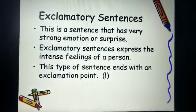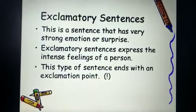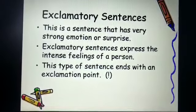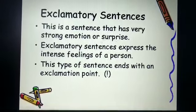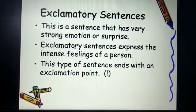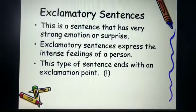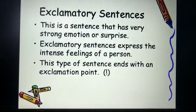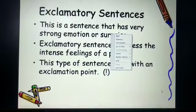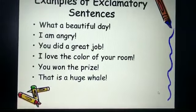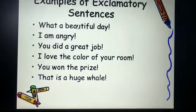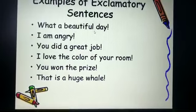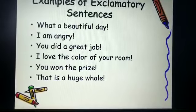The third type is exclamatory sentences. Now what are exclamatory sentences? This is a sentence that has very strong emotion or surprise. It will express the intense feelings of a person, and it always ends with an exclamation point. Some examples of exclamatory sentences: first, what a beautiful day! — it is indicating that we are expressing a feeling of our mind, which is why it is an exclamatory sentence.